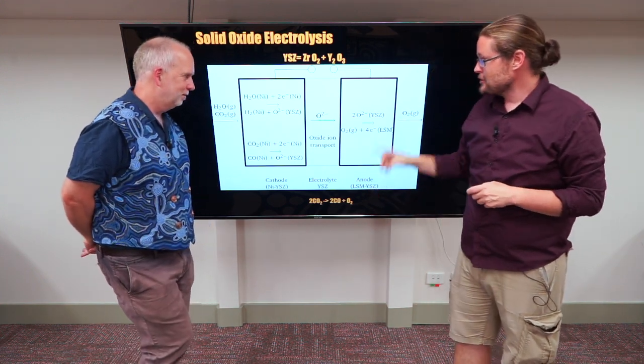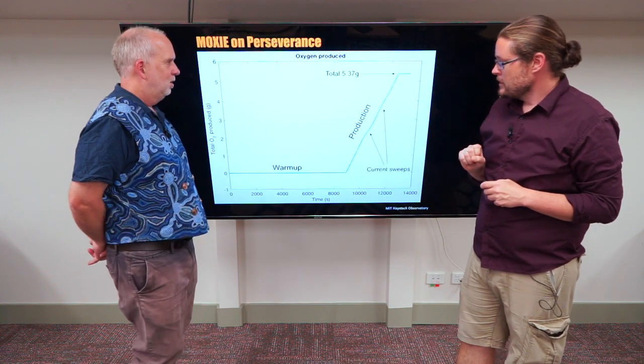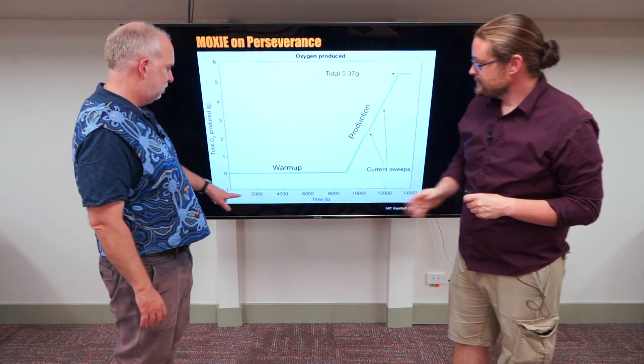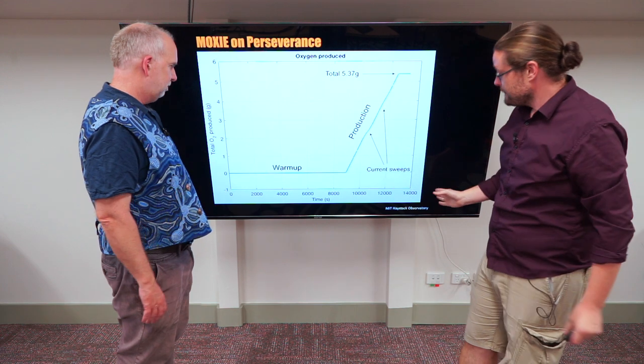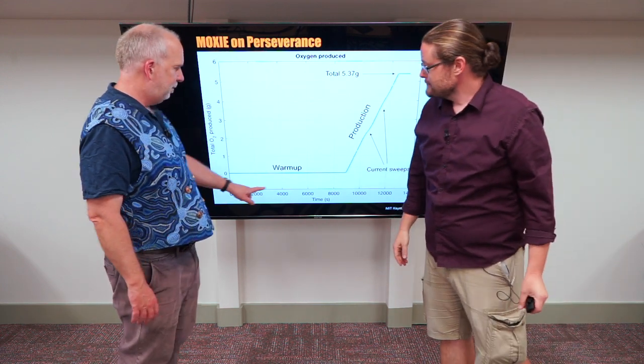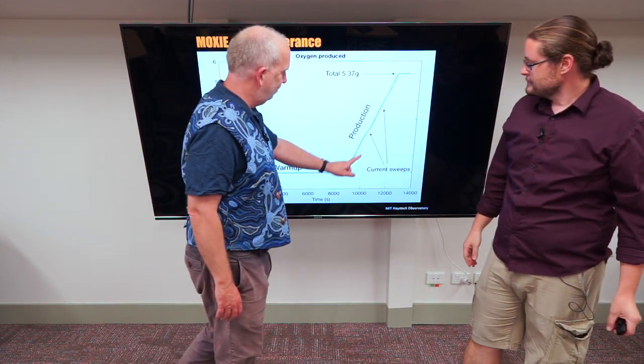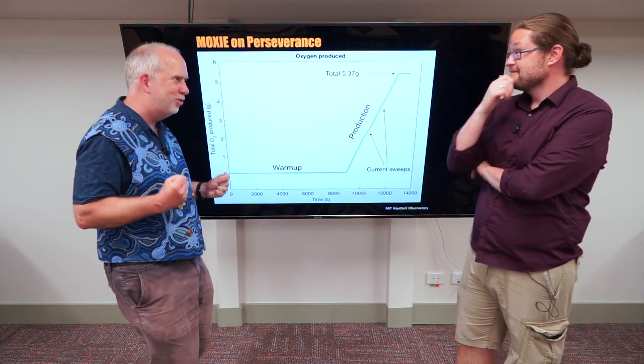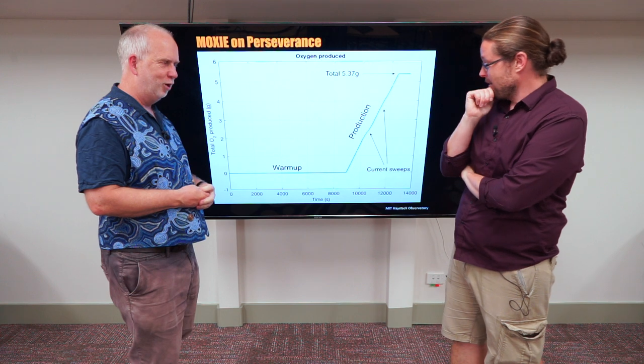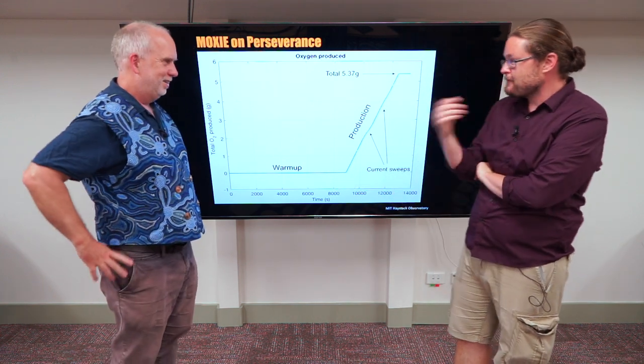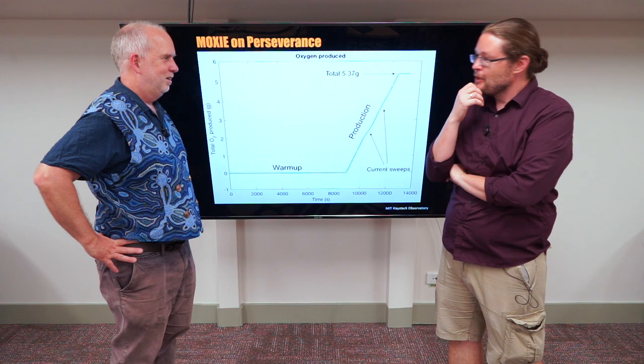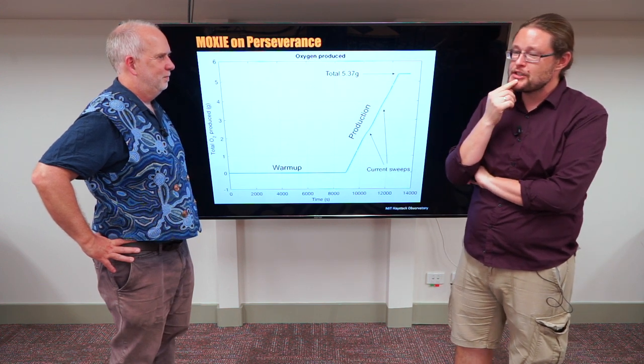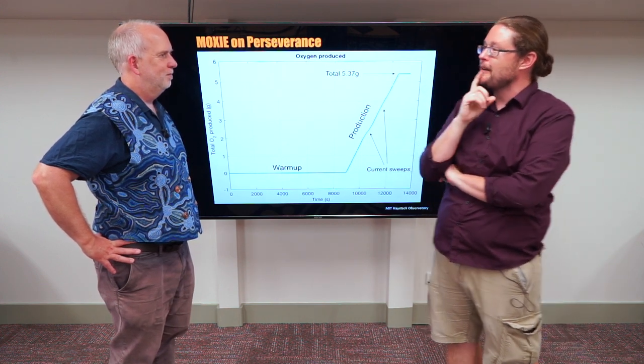But how much oxygen do we create? So, this is time in seconds. They start warming up. And then they turn on the current and they get 5.37 grams of oxygen. That's going to last me a long time. Well, and it took only about an hour. Is five grams useful? Well, it turns out five grams of oxygen gives you about ten minutes of air.